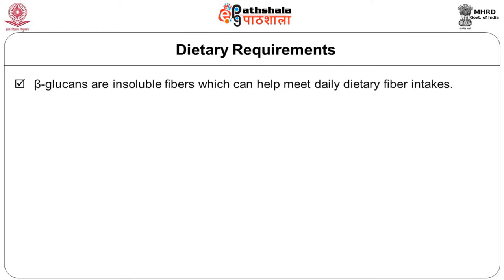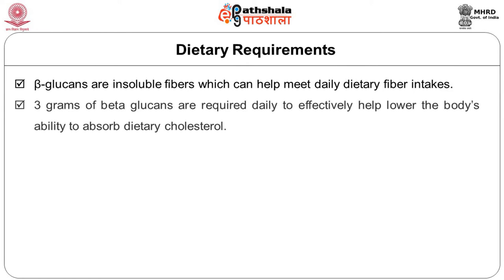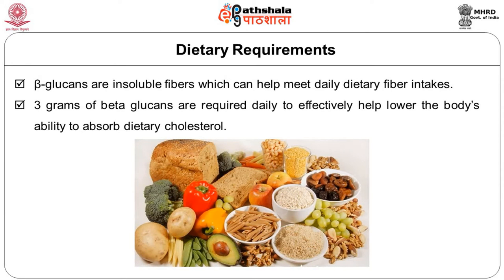Beta-glucans are insoluble fibers which can help meet daily dietary fiber intakes. However, 3 grams of beta-glucan are required daily to effectively help lower the body's ability to absorb dietary cholesterol. We should understand that India is primarily a vegetarian country — more than 80% of Indians consume plant foods as the source of their diet. Therefore, the dietary fiber fractions abundantly present in commonly consumed plant foods will meet the dietary fiber requirements of the average Indian population, as long as they are consuming the recommended dietary allowances for the various food groups described by the National Institute of Nutrition.